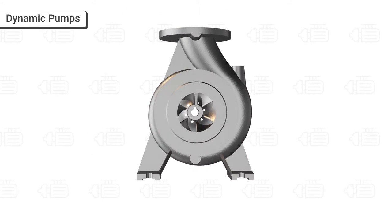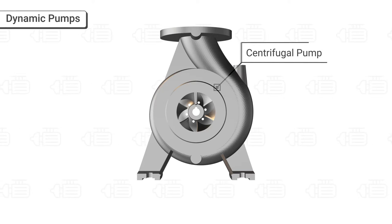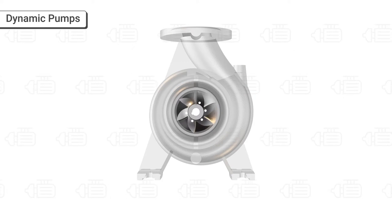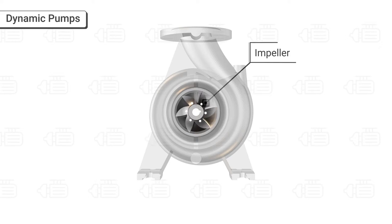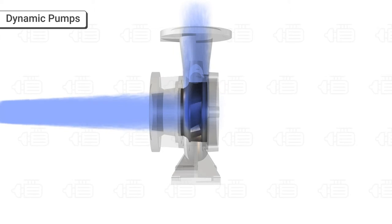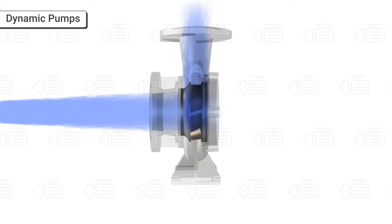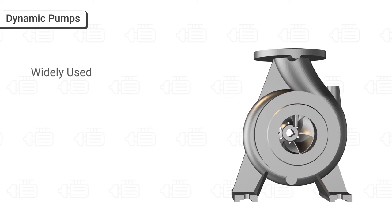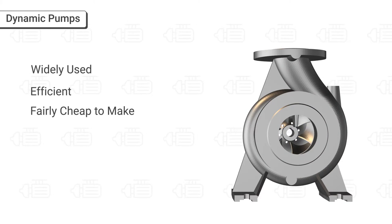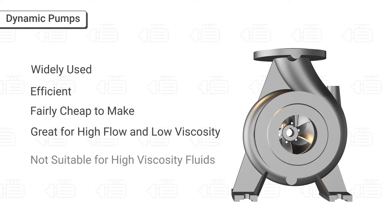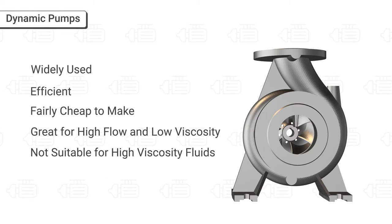Dynamic pumps, with their more well-known subcategory, centrifugal pumps, are the most commonly used worldwide. These pumps are designed to move fluid by transfer of rotational energy from the rotor, also called an impeller, to the fluid. The fluid is sucked into the rotating impeller along its axis and is moved out by centrifugal force. The action of the impeller increases the fluid's velocity and pressure and also directs it towards the pump outlet. These pumps are widely used, efficient, and fairly cheap to make, great for applications with higher flows and lower viscosity liquids, but not suitable for high viscosity fluids.